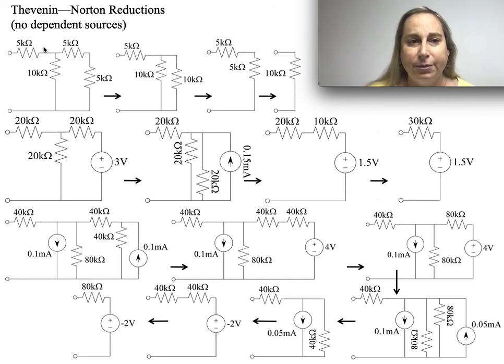An interesting thing when you start: you've got two 5k ohm resistors in series. You realize that becomes a 10k ohm resistor. You might realize resistors in series work like that.